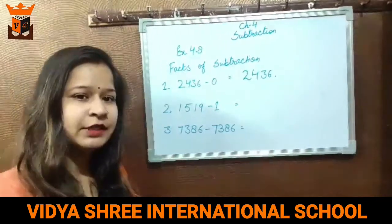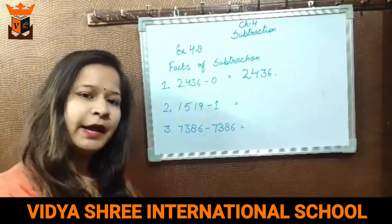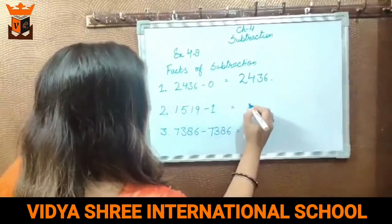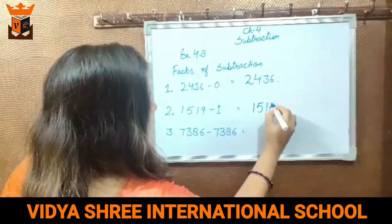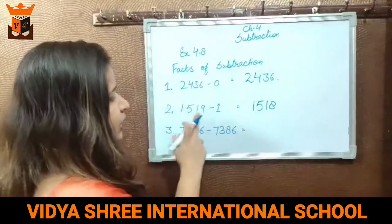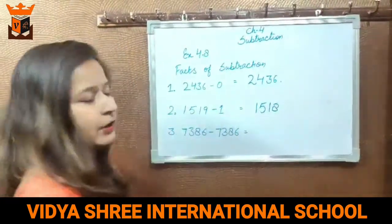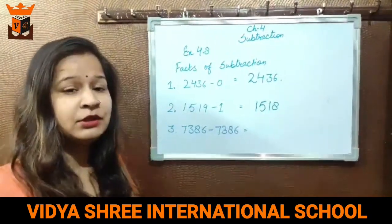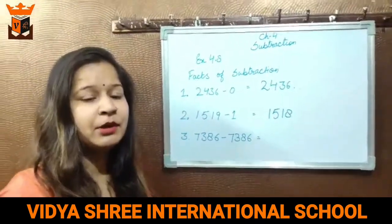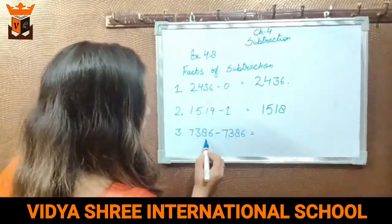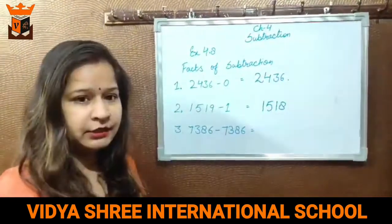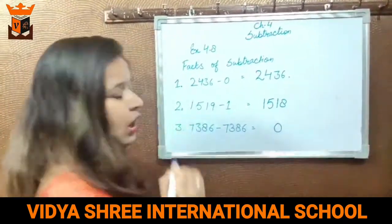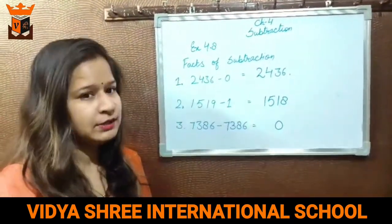Jab hum given number mein se 1 less karte hain, aur successor ke liye hum given number mein 1 add karte hain. Aap kisi number mein se same number ko deduct karte hain, yeh minus karte hain, yeh subtract karte hain — answer will be 0. Aap 1 mein se 1 hi less karo to kya milega aapko? 0.